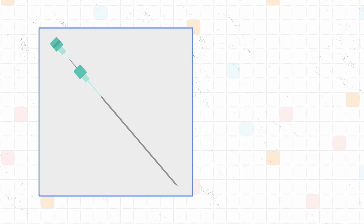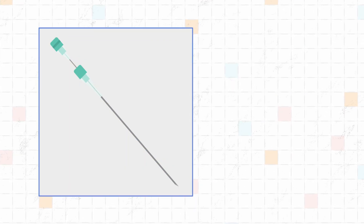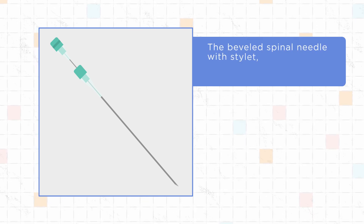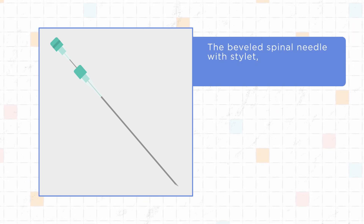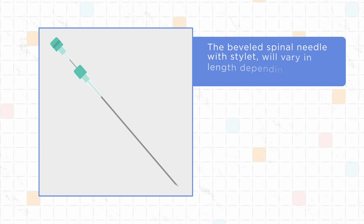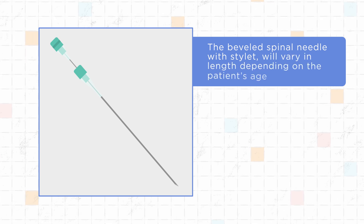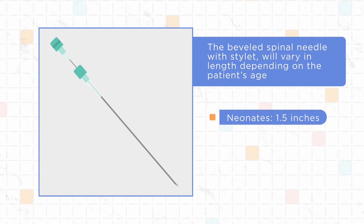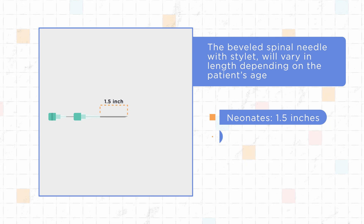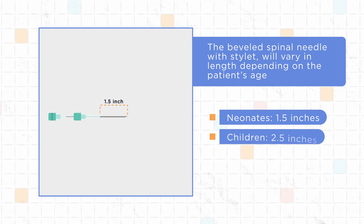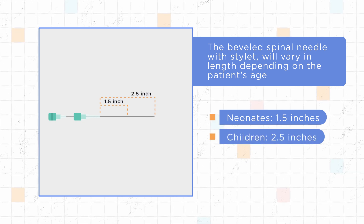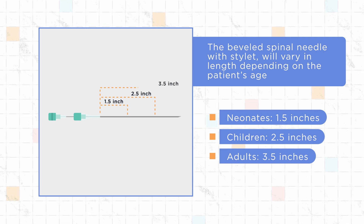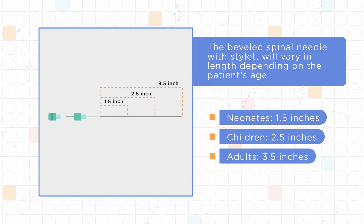Third, equipment differences. The 22 or 25 gauge beveled spinal needle with stylet that you will need for the lumbar puncture will vary in length depending on the patient's age. In neonates, the length of the needle should be 1.5 inches. In children, it should be 2.5 inches. And in adults, the length of the needle should be 3.5 inches.